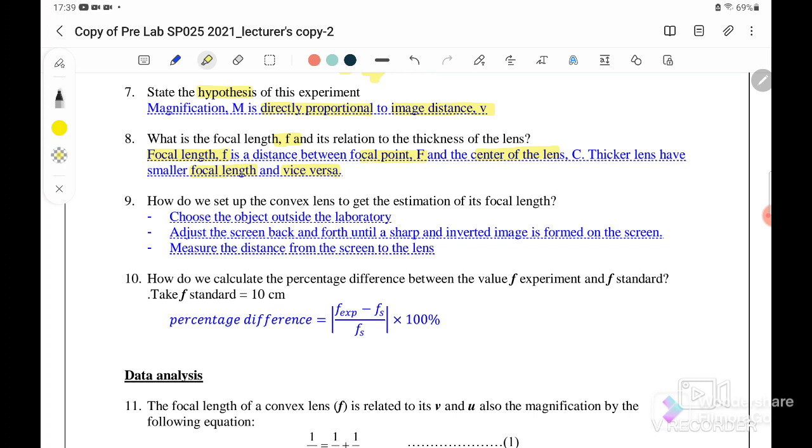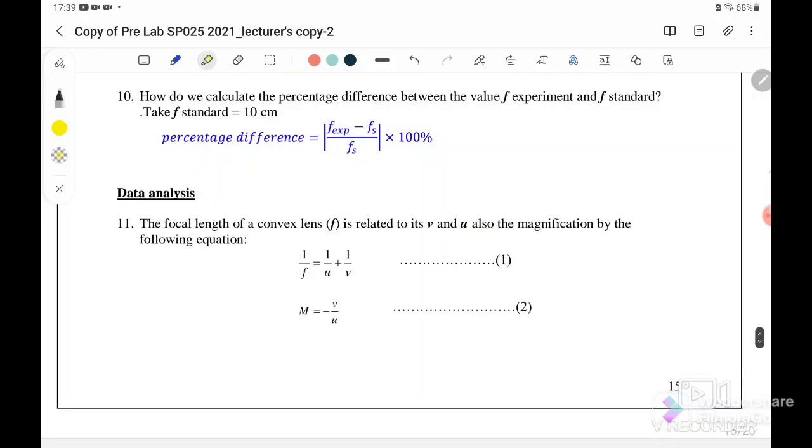Number nine: how do we set up the convex lens to get the estimation of the focal length? Number one, you must choose the object outside the laboratory. Then adjust the screen back and forth until a sharp and inverted image is formed on the screen. Number three, you must measure the distance from the screen to the lens. So this is how you get the estimation of the focal length.